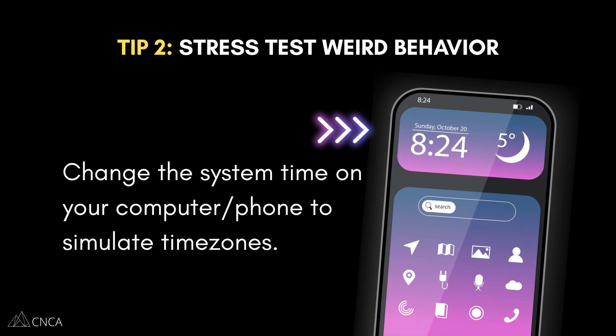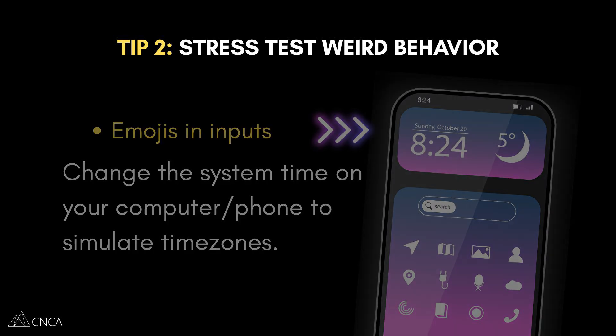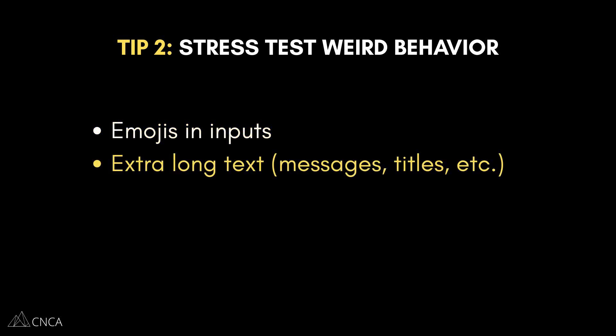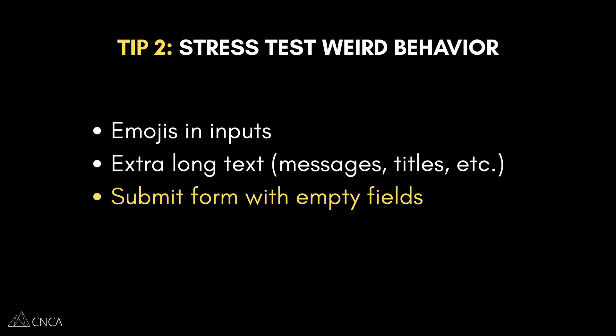You can simulate testing different time zones by just changing the system time zone on your computer. That way you can confirm any logic that's dependent on dates and times and make sure it's still working properly. Try weird inputs like emojis in a name field or really long messages. You can try submitting a form with a blank required field, and test error scenarios on purpose. What happens if the internet drops mid-signup? What if the payment fails? What if the user clicks the back button during onboarding? These are things that only show up in real-world usage because people do weird, unexpected things, unlike your clean test paths.